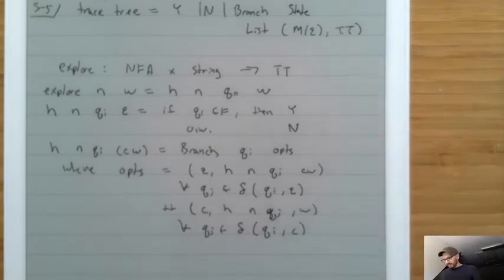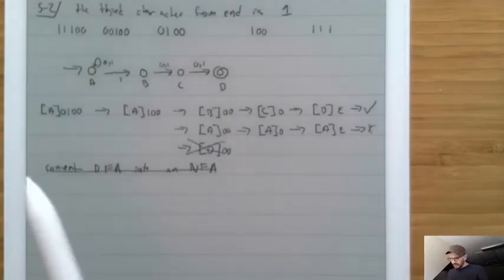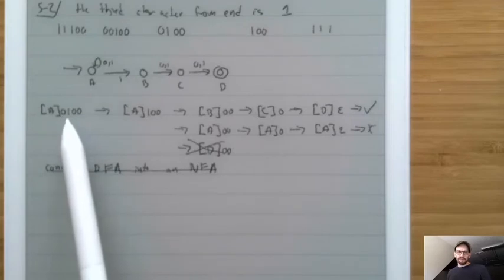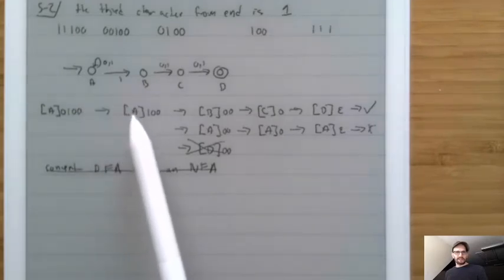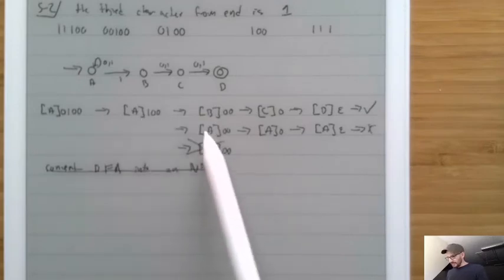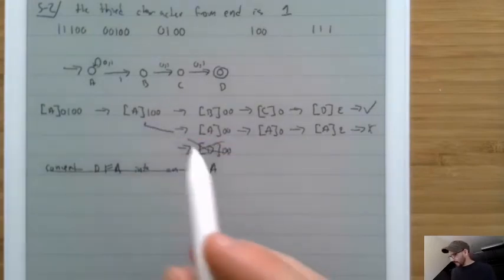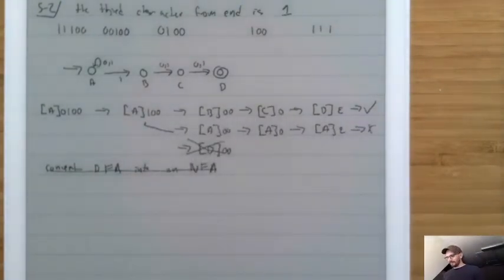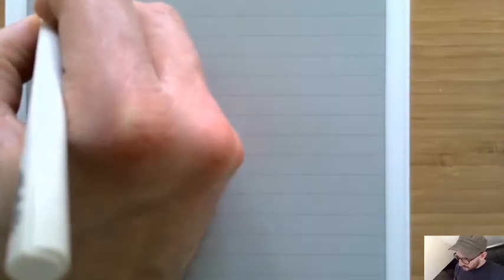This explore function is what we implicitly used when making the example. We started in the start state with the input string, looked at the next possibilities for a zero — there's only one, since everything else goes nowhere — and then explored the two branches. In general, when thinking about NFAs and the trace tree function, they have the possibility of quite complicated graphs.